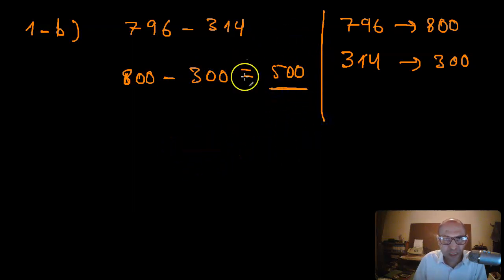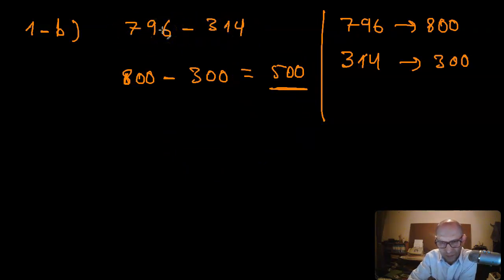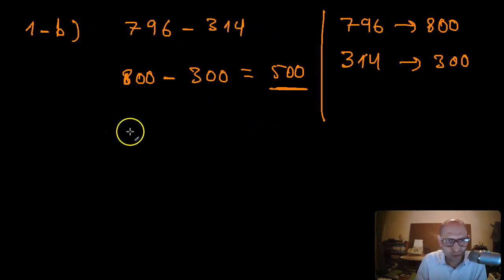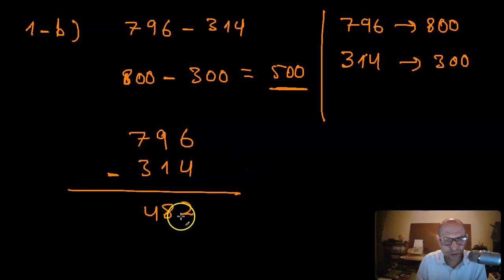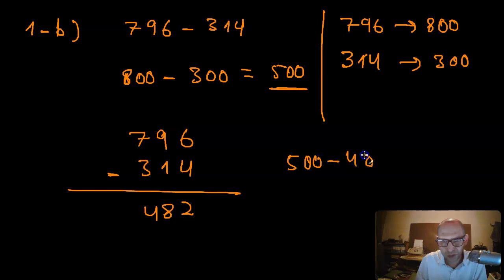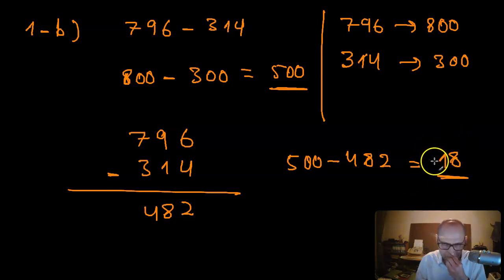500 is my estimated difference — not the sum, but the difference. The actual calculation: 796 minus 314 equals 482. So the difference between my estimate and the actual number is 500 minus 482, which is 18.